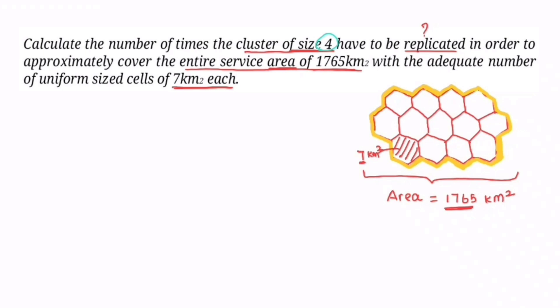I'm going to tell you what I'm doing in frequency reuse. We can get frequency reuse for a cell. That's the frequency reuse — that's why we don't have interference. We don't have the same frequency being reused nearby.